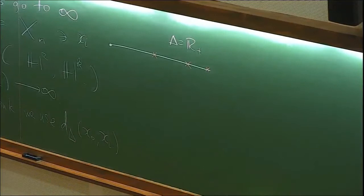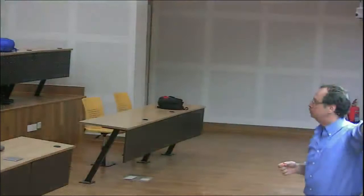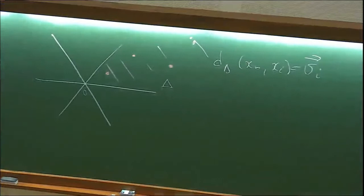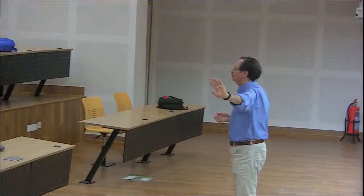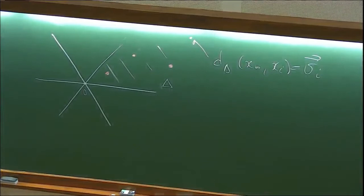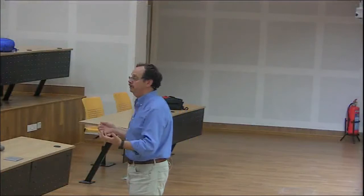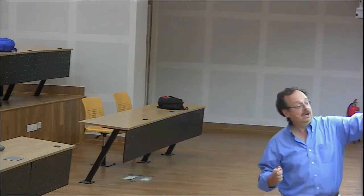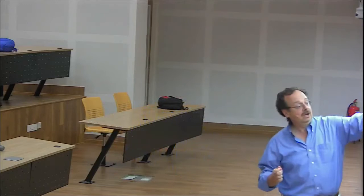One option is to stay close to the wall, traveling along the fence. That's one way to do it - that's definitely worth studying. The theory I'm talking about does cover this, but in my lectures I will concentrate on the generic behavior. Generically, a sequence will diverge to infinity away from the boundary of this cone.